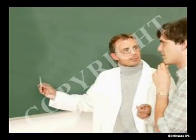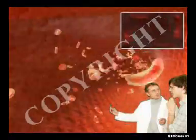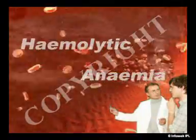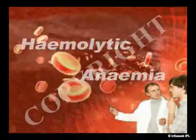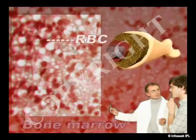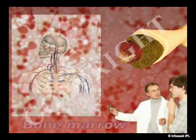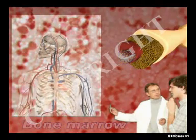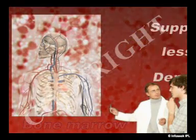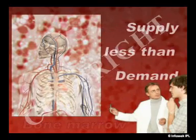Now let us learn about the types. Excessive destruction of red blood cells results in hemolytic anemia. It occurs when red blood cells are being prematurely destroyed and the bone marrow cannot meet the body's demand for new cells — a plain case of net deficit in demand and supply.